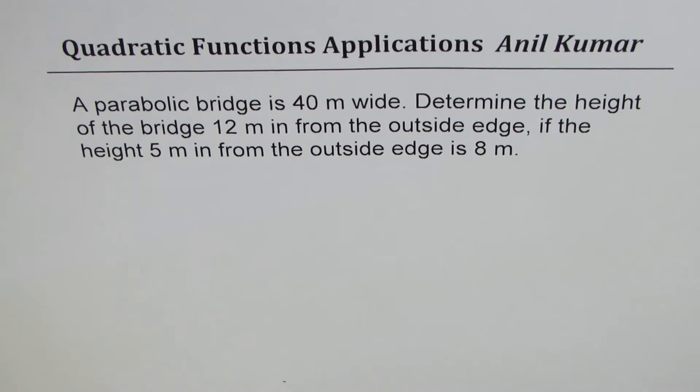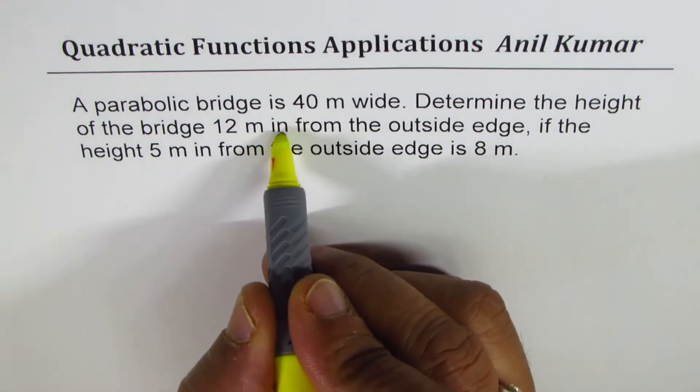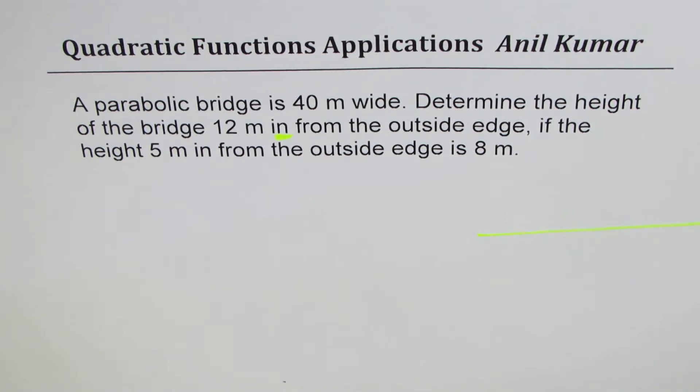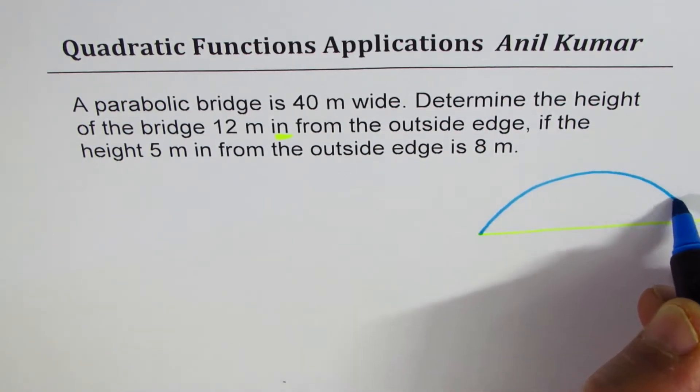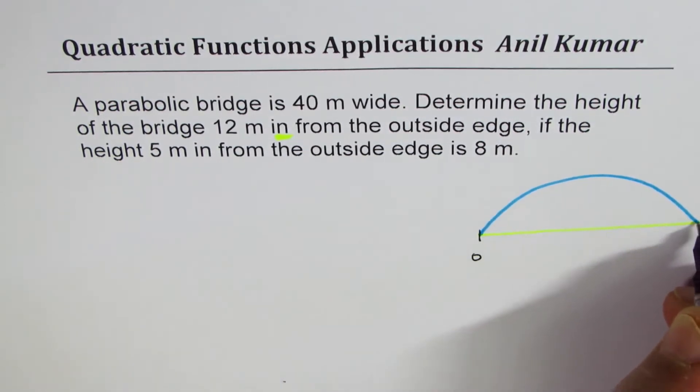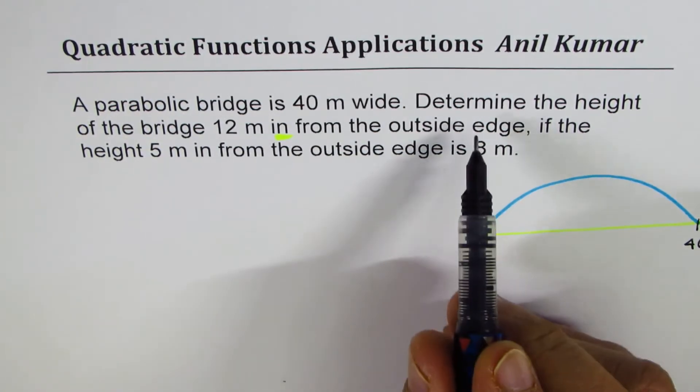Let's try to understand these terms, especially this 'in' coming in. Let's sketch here. Let's say that's the bridge. Since we are saying it is 40 meters, we'll say this is 0 for us and that is 40. A parabolic bridge, that's the shape.